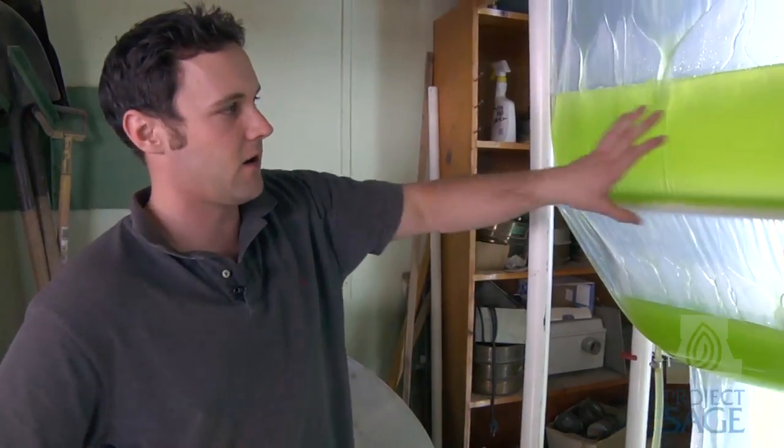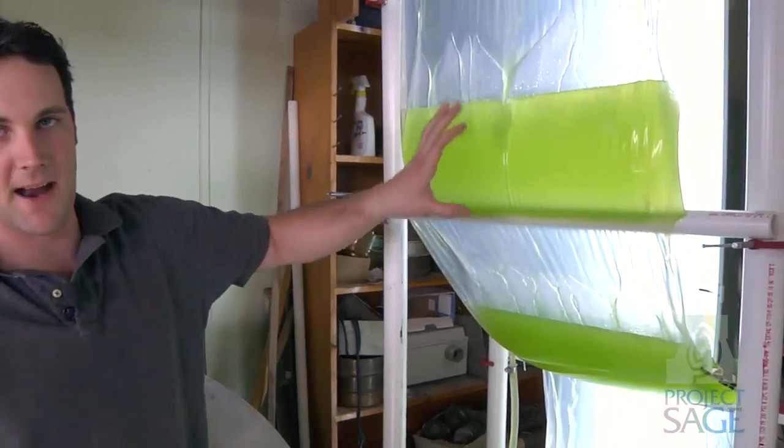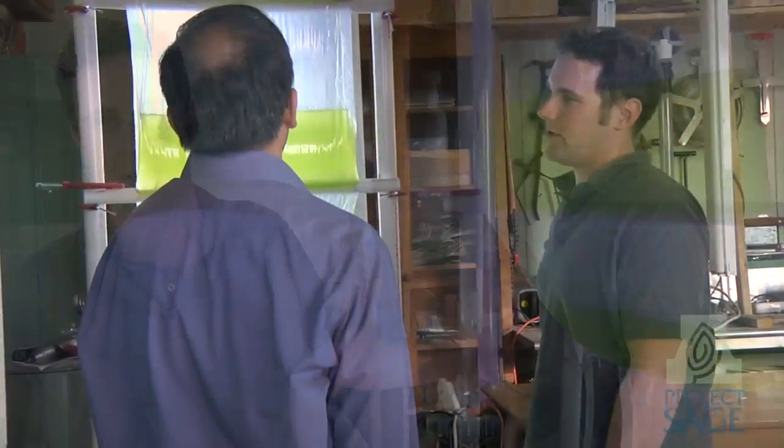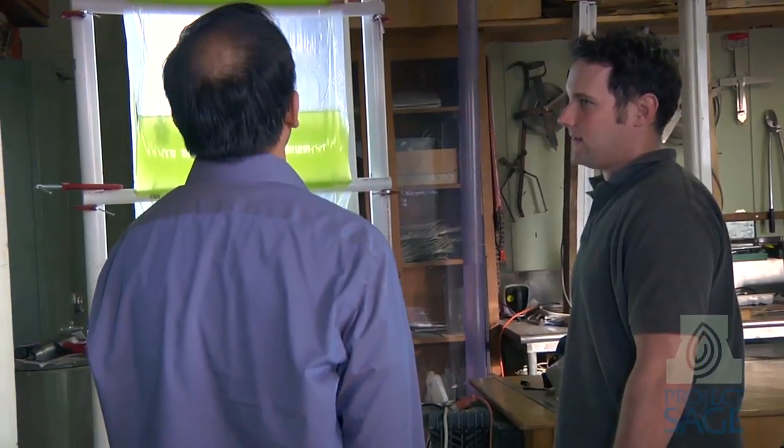We're dispersing the light over the entire volume of the reactor, the entire volume of the fluid. That's how we efficiently use the sunlight or the light that is incident on the algae.